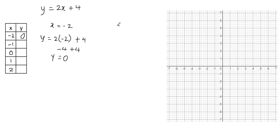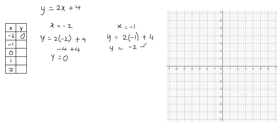Now I'm going to plug in x equals negative 1 and see what I get for y. This gives y equals 2 times negative 1 plus 4. Make sure you put the negative sign inside the parentheses so you don't make any mistakes. 2 times negative 1 is negative 2, and negative 2 plus 4 is positive 2. So when x is negative 1, y is equal to 2.